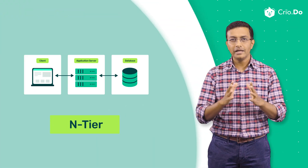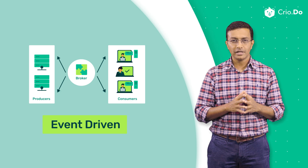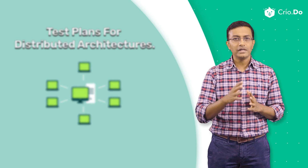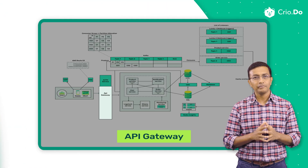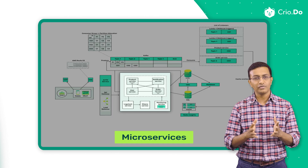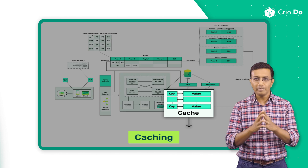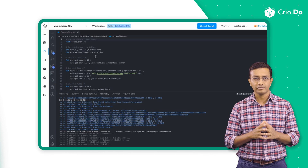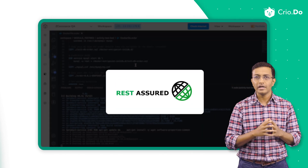We will start with understanding software architectures like N-tier, microservices architecture, event-driven architecture, etc., and create test plans for distributed architecture. You will then learn the concepts of load balancer, API gateway, Kafka, microservices, databases, and caching. You are then ready to do API testing for a Docker version of these microservices. You will create a testbed and test the microservice using REST Assured in Java, making use of Postman collections and a mock server.